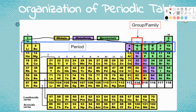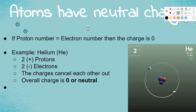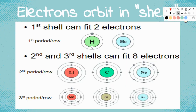What this is saying is that in this first period there is one shell. All of these atoms have shells around them. Here you see hydrogen has one shell, helium right here has one shell. That's why they're in the first row, in that first period — because they only have one shell.